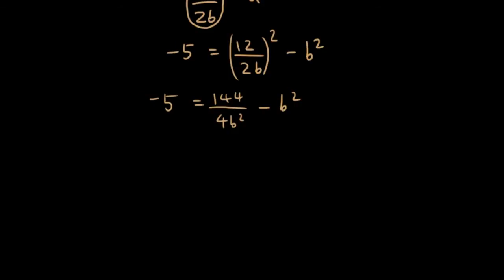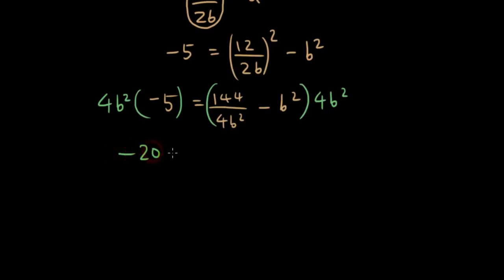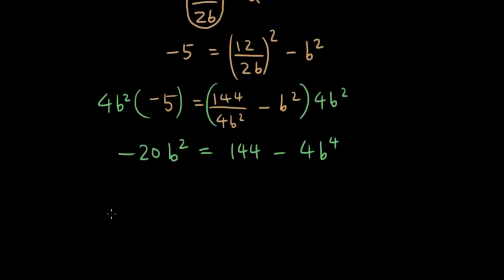Let's get rid of the squared sign: negative 5 equals 144 over 4b squared minus b squared. Let's multiply the whole equation by 4b squared to get rid of the fraction. So I get negative 20b squared equals 144 minus 4b to the power of 4, because 144 times 4b squared divided by 4b squared gives 144, and 4b squared times b squared is 4b to the power of 4. Moving everything to the left: 4b to the power of 4 minus 20b squared minus 144 equals 0.